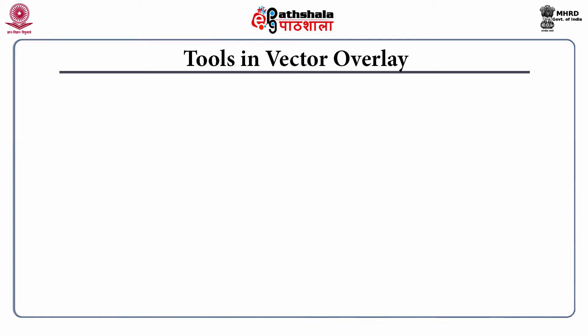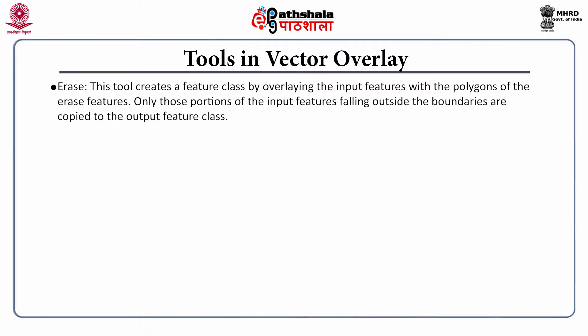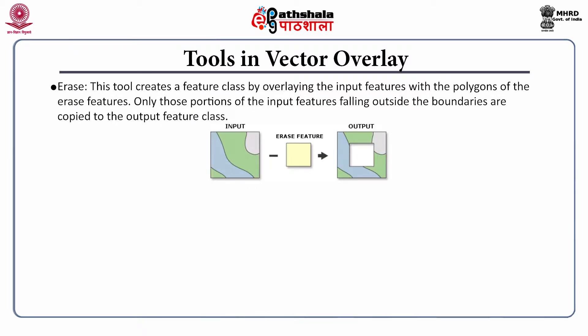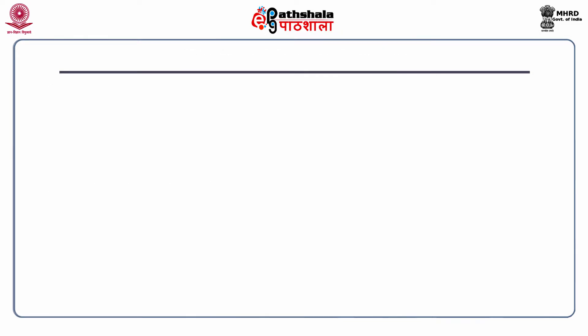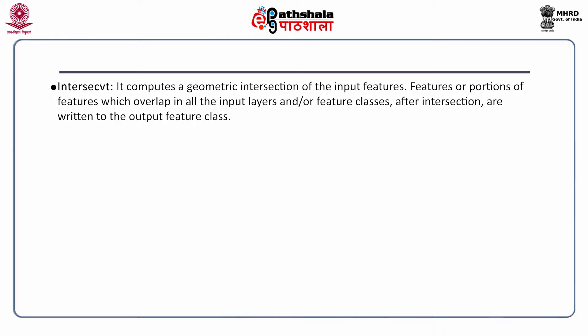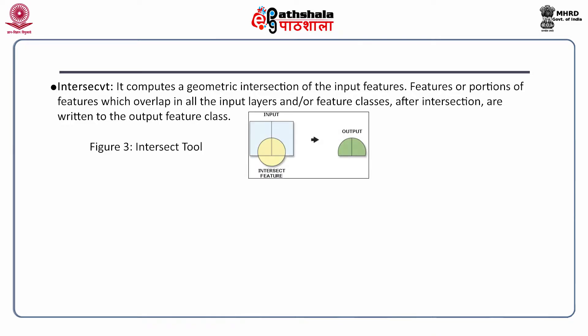Coming to the tools in vector overlay, the first tool is the erase tool. As you can see from the figure, this tool creates a feature class by overlaying the input features with the polygons of the erase features; only those portions of the input features falling outside the boundaries are copied to the output feature class. The next tool is the identity tool, which computes a geometric intersection of the input features and identity features — input features that overlap identity features get the attributes of those identity features. The third tool is the intersect tool, which computes a geometric intersection of the input features. Features or portions of features which overlap in all the input layers are written to the output feature class, as visible in figure 3.